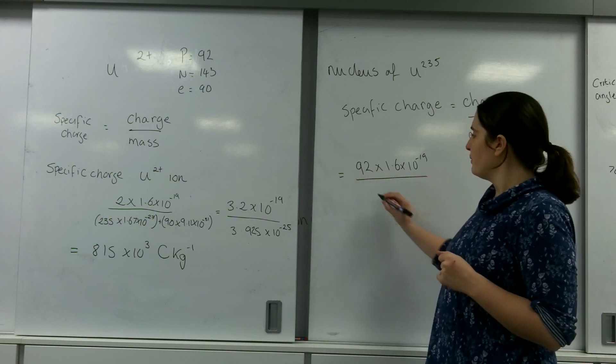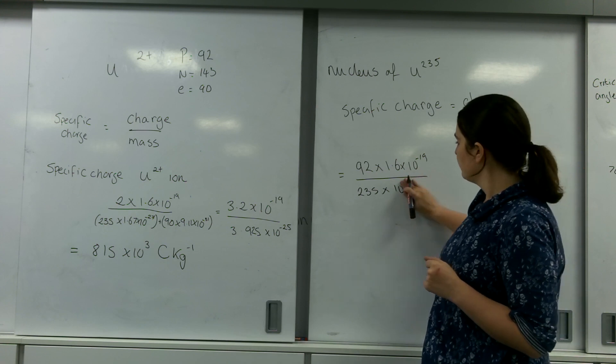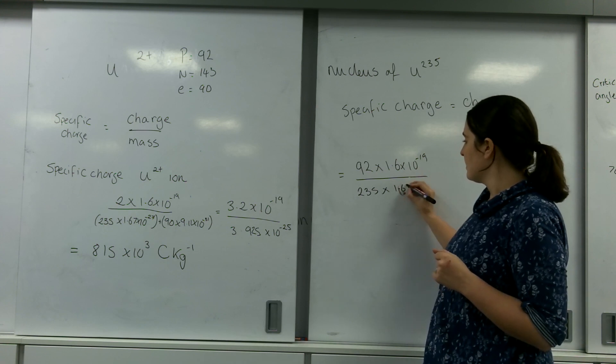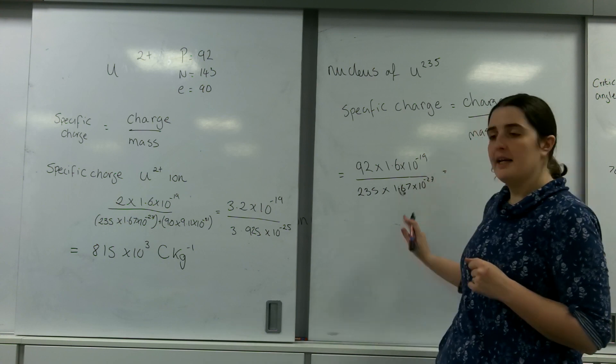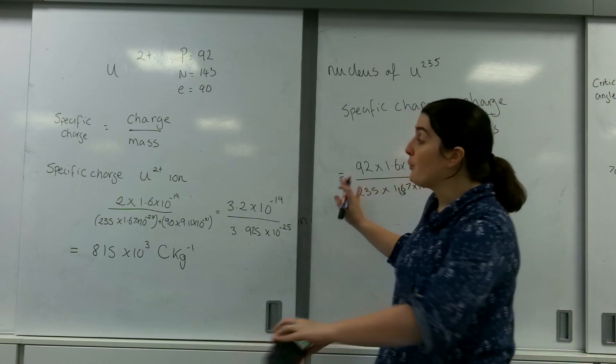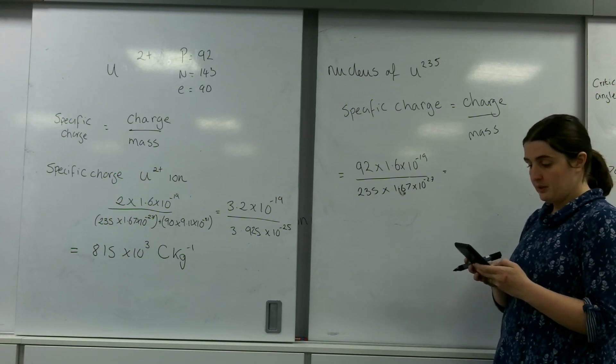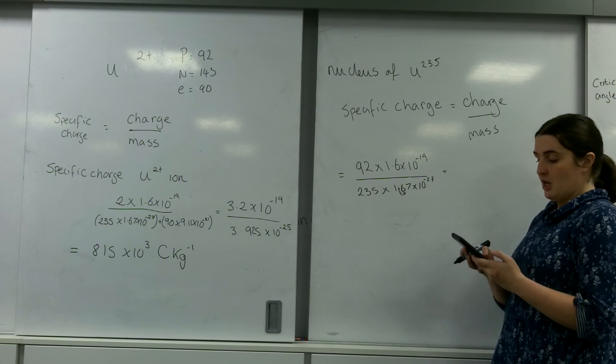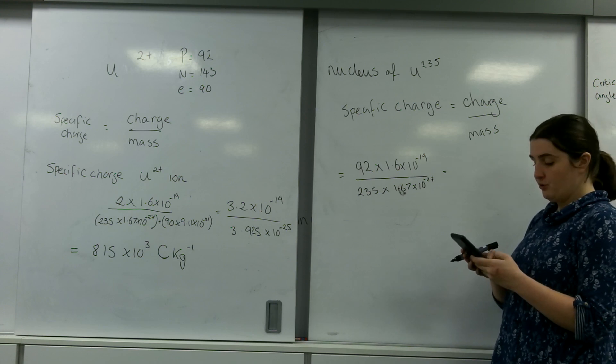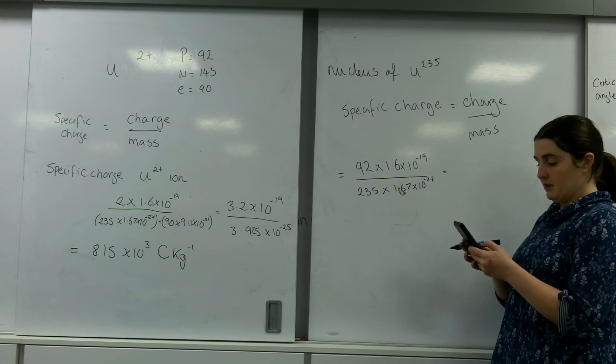So, divided by 235 times 10 to the minus - I apologize - 1.67 times 10 to the minus 27. Again, I'm just looking at the nucleus. We don't add anything here. So, that's 92 times 1.6 times 10 to the minus 19, divided by 235 times 1.67 times 10 to the minus 27.